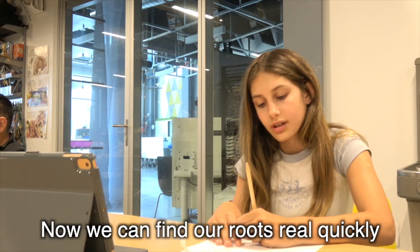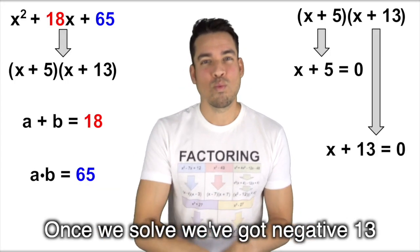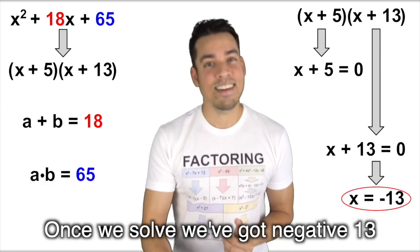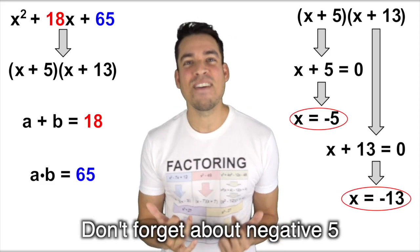Now we can find our roots real quickly when we set each factor equal to zero. We get negative 13 and negative 5.